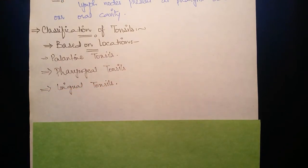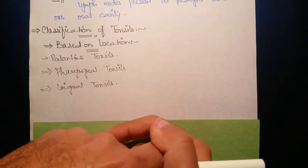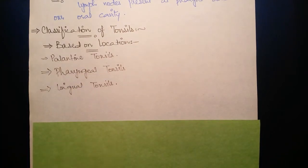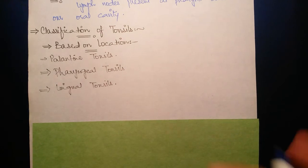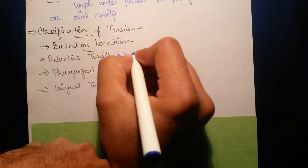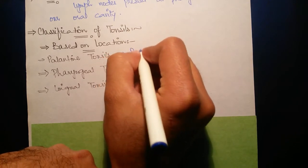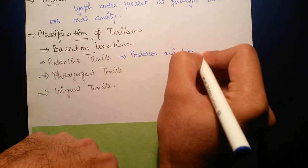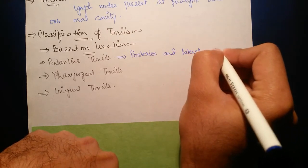Number one, palatine tonsils is known for the inflammation of the palatine tonsils. Palatine tonsils are located on the posterior and lateral wall of oropharynx.